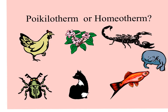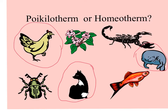Look at these examples of organisms and identify which is a poikilotherm — temperature dictated by the external environment — and which is a homeotherm. The organisms that are warm-blooded are homeothermic: the fox, the human, and the chicken. These are ones that have internal thermostats allowing them to expend energy to regulate their temperature. The rest — the plant, the invertebrates, and the fish — are poikilotherms.